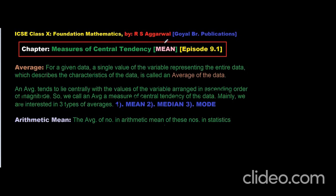Sometimes they use the word mean, sometimes they use the word average. What is the meaning of mean? What is the meaning of an average? For a given data, a single value of the variable representing the entire data which describes the characteristics of the data is called an average of the data. This is just a simple definition, but unless you work it out with an example, you won't follow the meaning of an average.